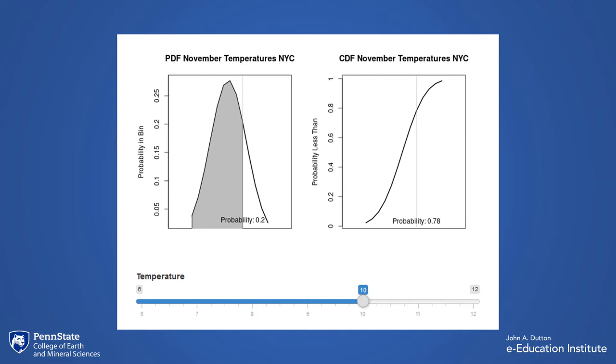This next example shows two different graphic representations of the probability of a certain temperature in November in New York City. The students can use the slider at the bottom of the screen to change the temperature between 6 and 12 degrees, and view the differences in the graphs above.